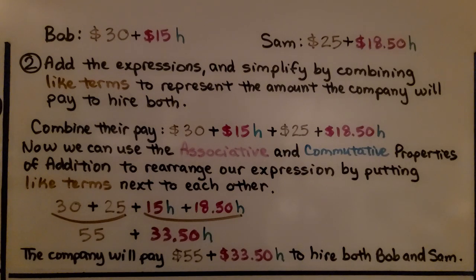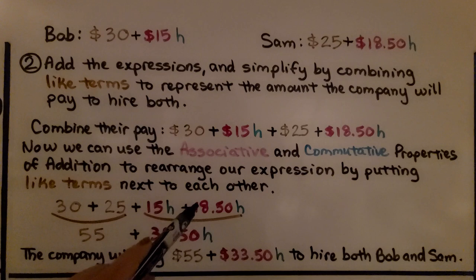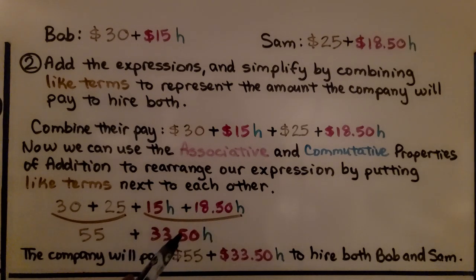We have $30 plus $15h plus $25 plus $18.50h. Now we use the associative and commutative properties of addition to rearrange our expression by putting like terms next to each other. We've got $30 plus $25 plus $15h plus $18.50h. That makes $55 plus $33.50h.